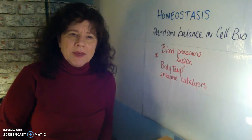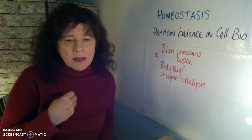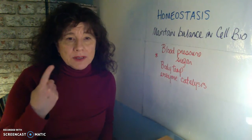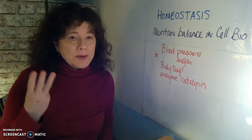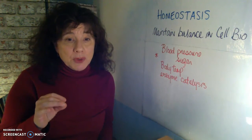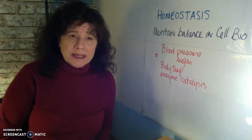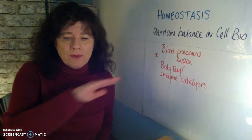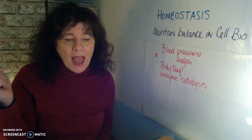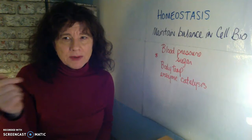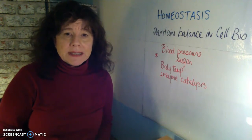Hi everyone. Your lab this week is cell structure and function. You have three activities in it. One of them involves diffusion, one of them involves osmosis, and one of them involves differentiating between prokaryotes, eukaryotes and viruses. The first two activities fall under the umbrella of homeostasis. So let's talk about homeostasis and its relationship to cell structure and function so you understand why you're doing this lab.